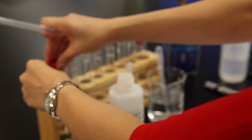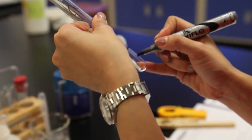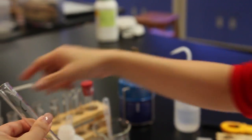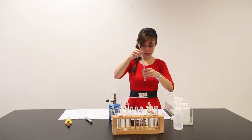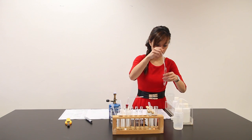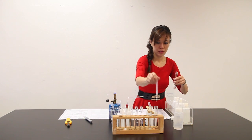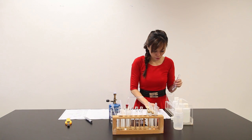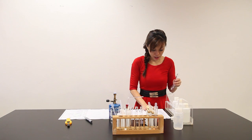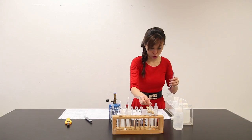Let me put this here. It says place about 2 cm³ of Q into a clean test tube. This is Q. I'm supposed to put 2 cm³ of Q into this test tube. And then it says add a few drops of sodium hydroxide, shaking the test tube between each drop.